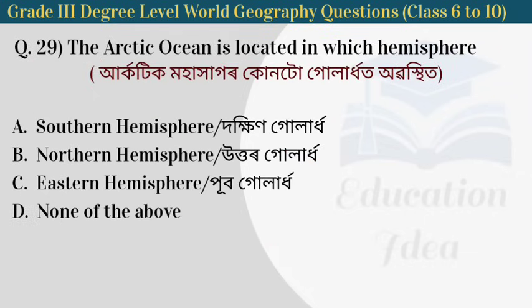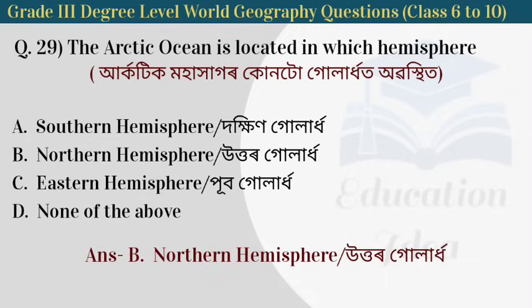Next question: the Arctic Ocean is located in which hemisphere? The answer is the Northern Hemisphere — the Arctic Ocean is located in the Northern Hemisphere.